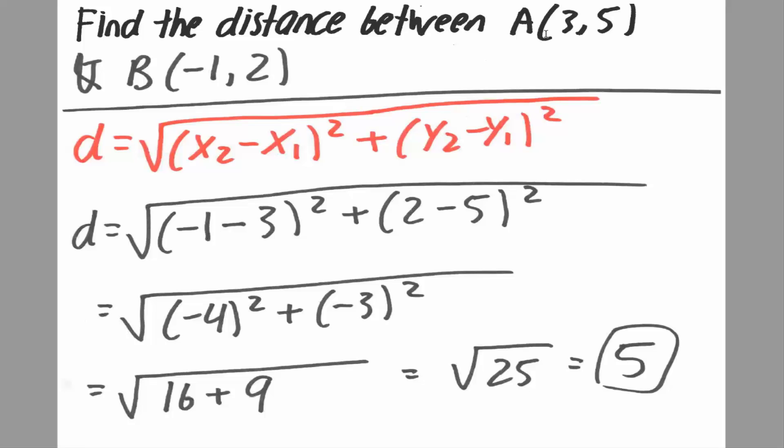Where you could say that this is x1 and then this is y1, this is x2, and this is y2. So we get the square root, we do x2.